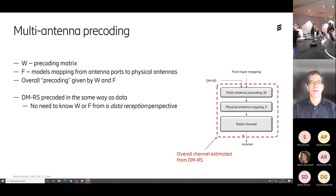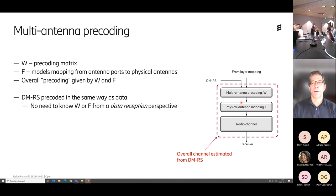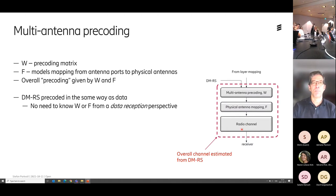And then we get to the more interesting part — multi-antenna pre-coding. As illustrated here, you have the layer mapping with the different MIMO layers. You feed that through a pre-coding matrix, and out comes pre-coded layers, which are fed into whatever antenna setup you have at the transmitter side. It could be as many antennas as we have layers, or more — maybe two layers but ten antennas. That's an implementation thing, modeled here as the matrix F. Then that goes through the radio channel and is received by the receiver.